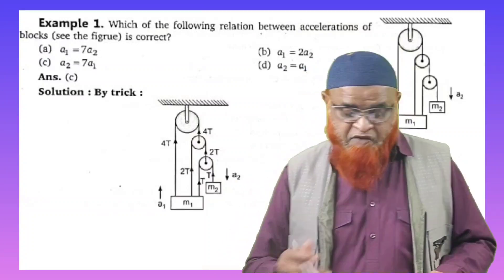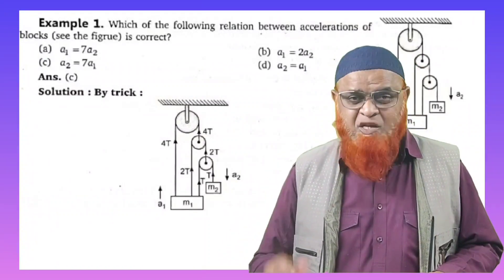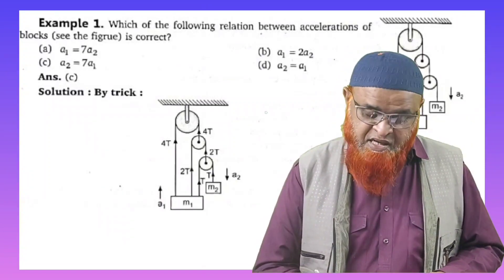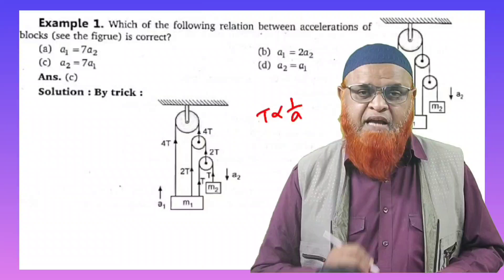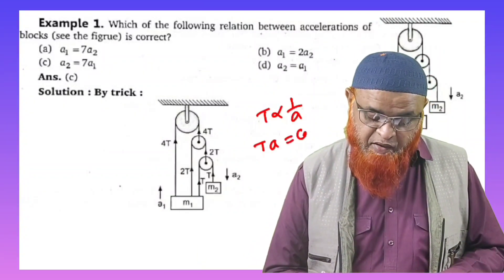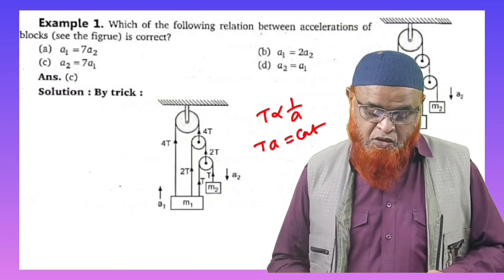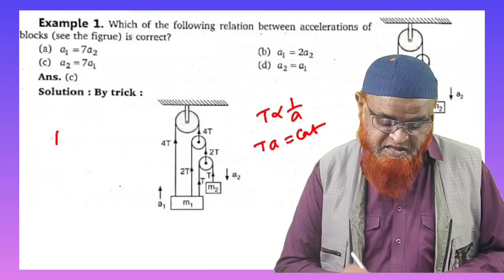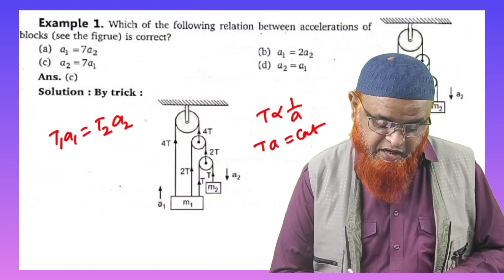So let us see here. If you observe, this is a multiple pulley case. There is one shortcut here. The shortcut is: tension is inversely proportional to acceleration. Remember this shortcut. With this, it is clear that tension into acceleration is going to be constant. So you can consider T1×a1 equals T2×a2.